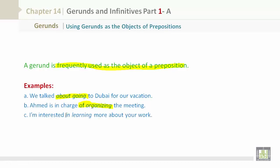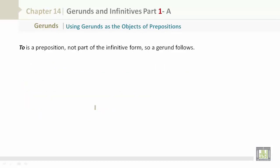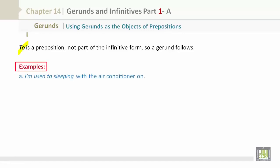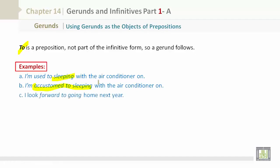'I'm interested in learning more about your work.' Note that 'to' can be a preposition, not part of the infinitive form, so a gerund follows it. Examples: 'I'm used to sleeping with the air conditioner on.' 'I'm accustomed to sleeping with the air conditioner on.' 'I look forward to going home next year.' 'They object to changing their schedule at this late date.'